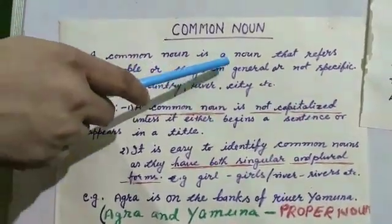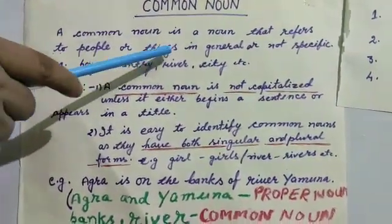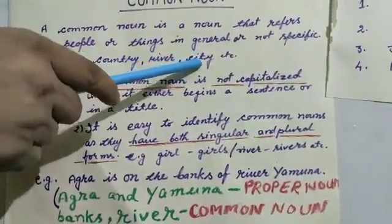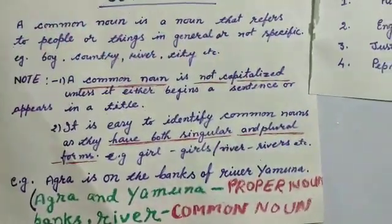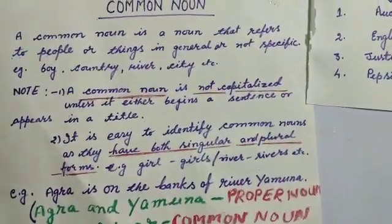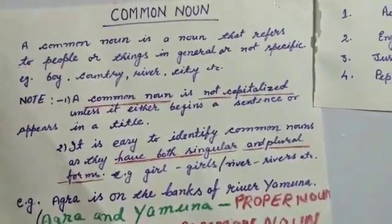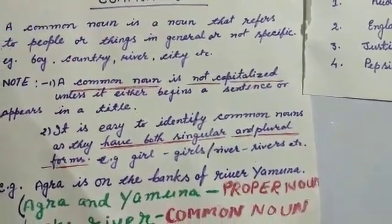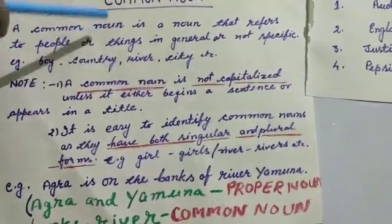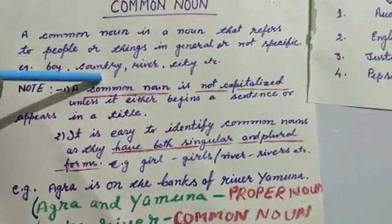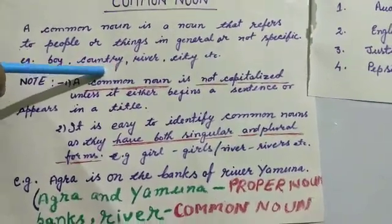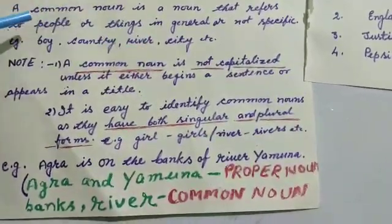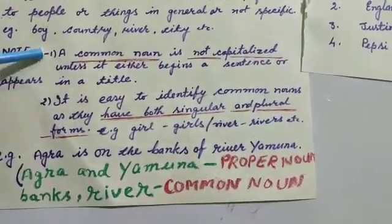First in order comes common noun. A common noun is a noun that refers to people or things in general, not specific. Such as boy, country, river, city, etc. For example, if I say 'Ram is eating chocolate,' Ram is the name of a specific boy. But if I say 'a boy is standing under a tree,' I've used only boy, which is general — that is a common noun, not a specific person. Similarly, if a country's name is given, it is a proper noun; if it is just 'country,' it is a common noun.